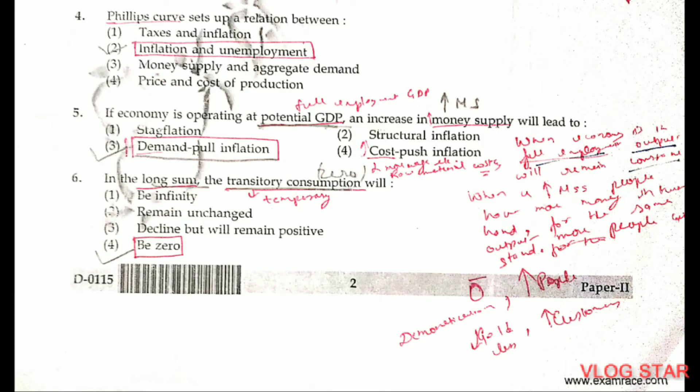Question number 4. The Phillips curve tells the relationship between inflation and unemployment. Question number 5. If the economy is operating at potential GDP, an increase in the money supply will lead to demand-pull inflation.